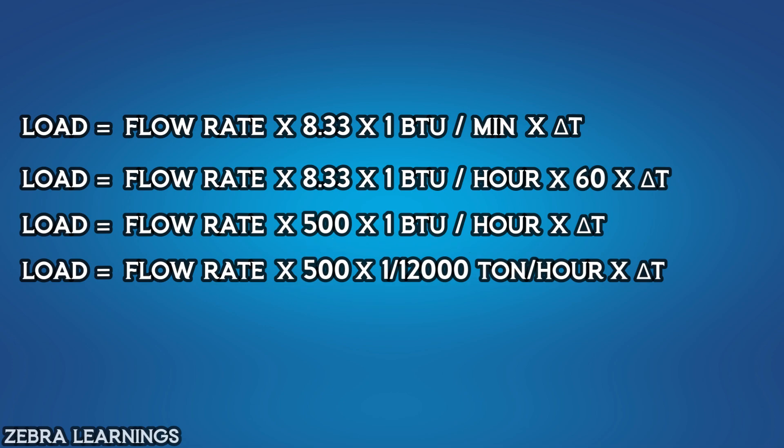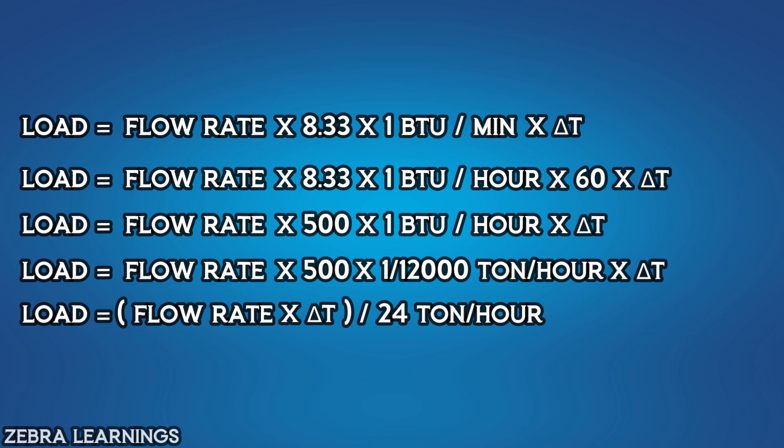So the final formula is load equals flow rate multiply delta T overall divided by 24, ton per hour. This is the simplified formula for calculating chiller load.